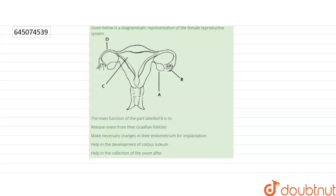The question says: Given below is a diagrammatic representation of the female reproductive system. The main function of the part labeled B is to: release ovum from the Graafian follicles, make necessary changes in the endometrium for implantation, help in development of corpus luteum, or help in the collection of the ovum after ovulation.